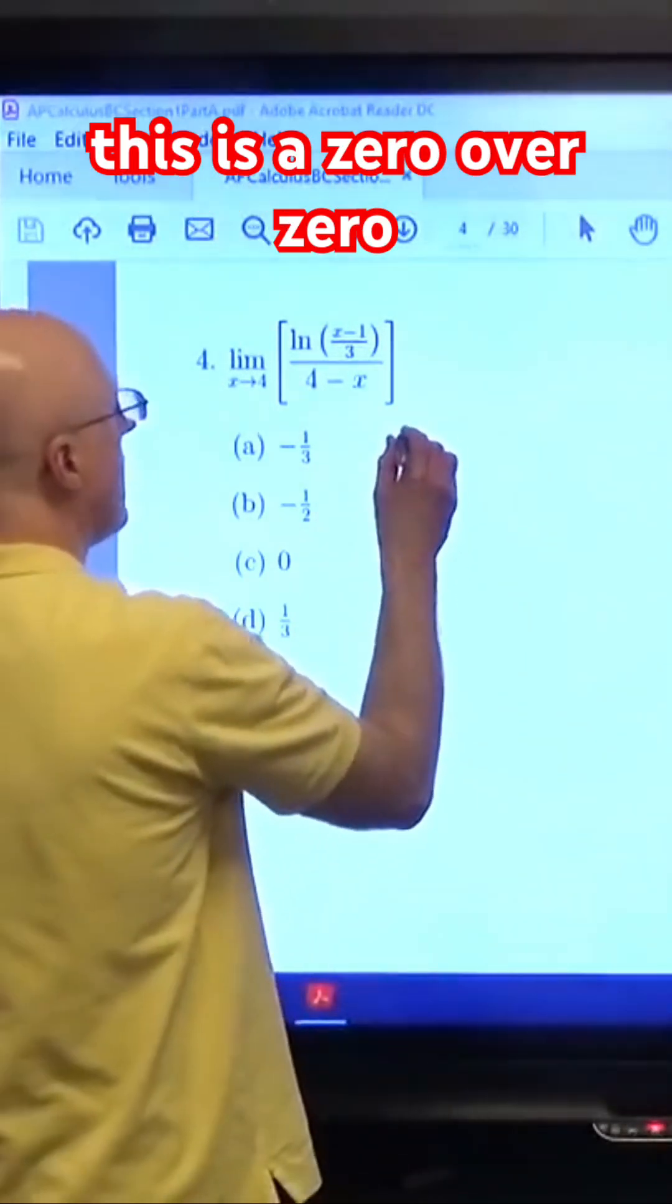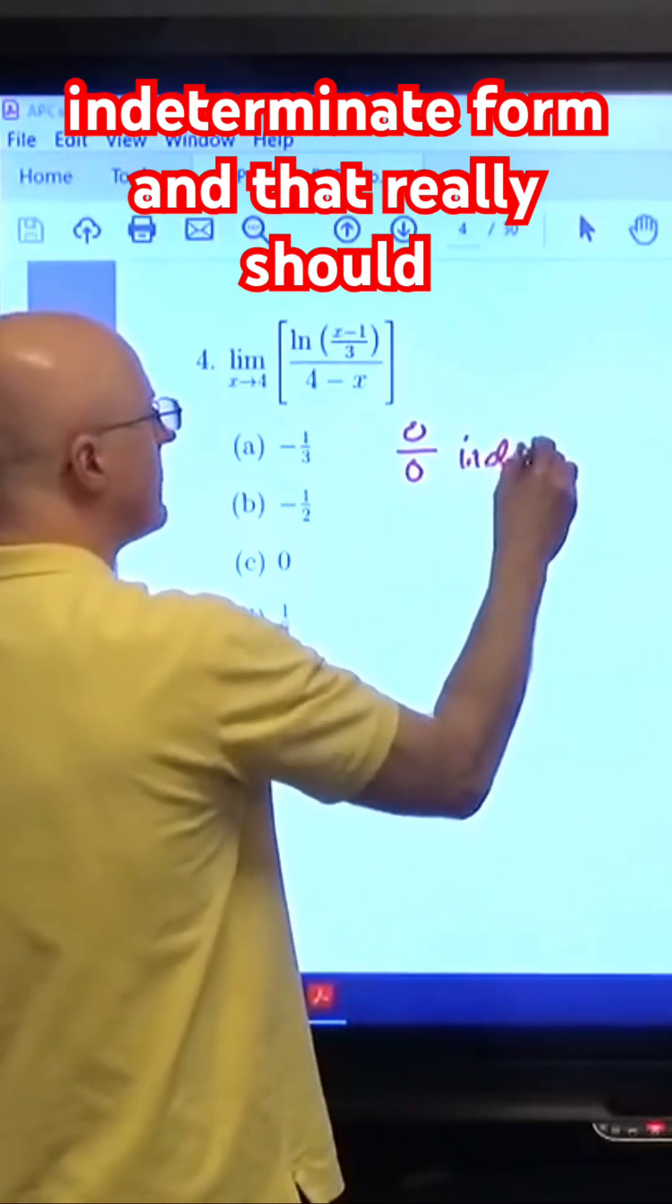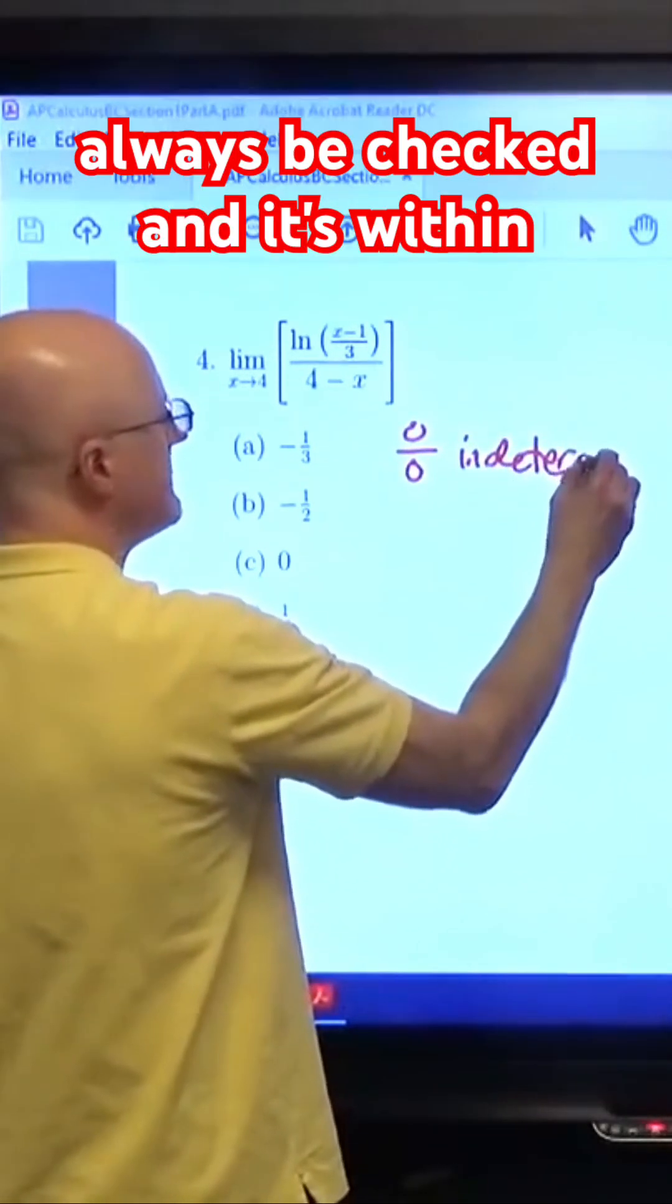Yes, this is a 0 over 0 indeterminate form, and that really should always be checked.